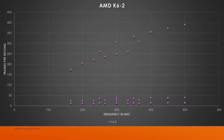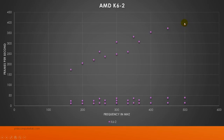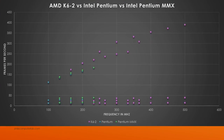Next processor: the AMD K6-2. Straight away we can see the performance is a lot higher. It clocks up — it's rated up to 500 megahertz, and there's a 550 megahertz model as well. We can see we get up to almost 400 frames, whereas with the Pentium MMX we got up to 200. In the legend, the purple is the K6-2, the blue is the Pentium, and the green is the Pentium MMX.